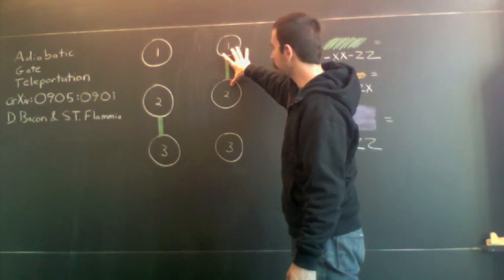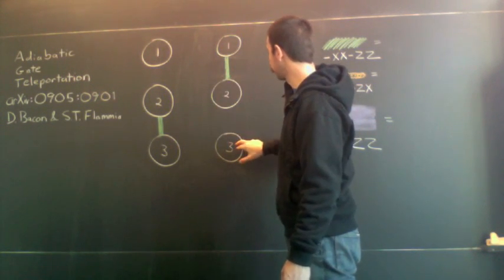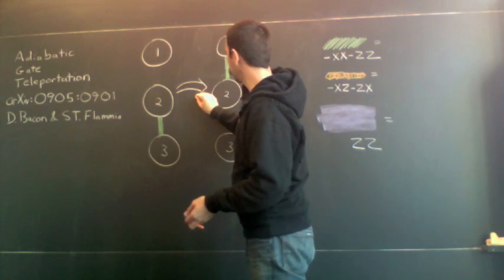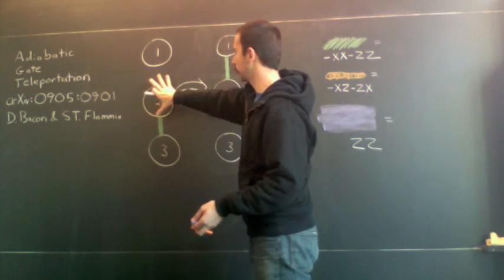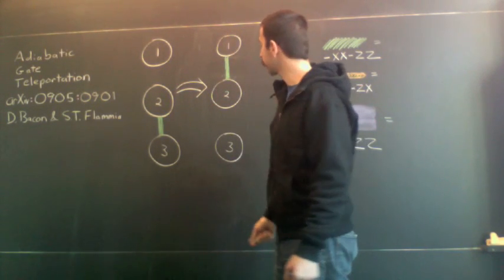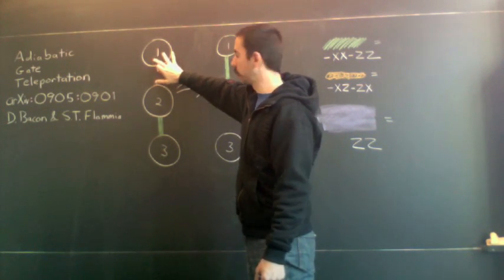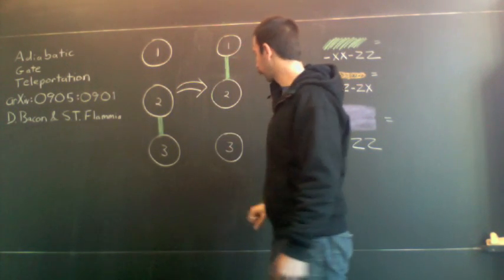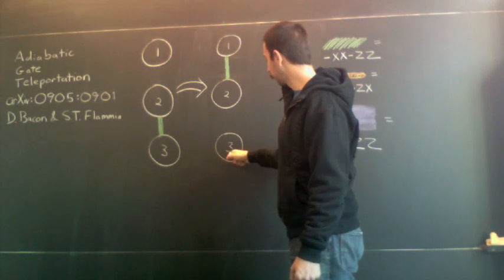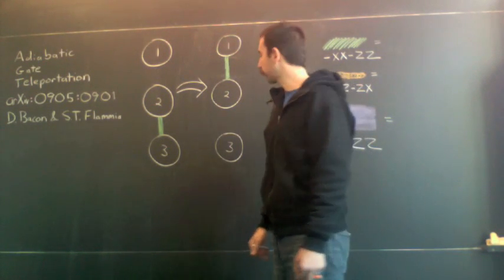Similarly, I could also imagine that the Hamiltonian coupled qubits one and two instead. The first thing we ask is: what happens if we do an adiabatic interpolation from this system to this system? We show in our paper that whatever logical information was stored in the first physical qubit is dragged over to reside, after the adiabatic transport, in the third physical qubit.